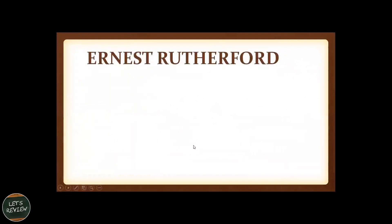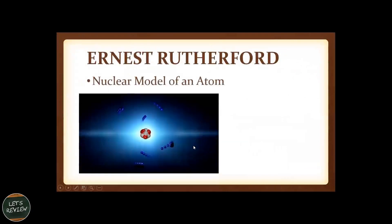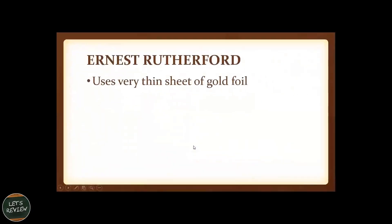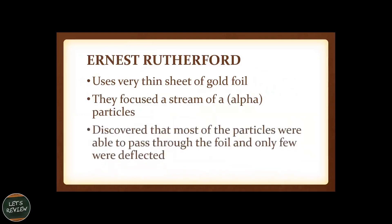Next is the idea of Ernest Rutherford. He called it the nuclear model of an atom. The atom is composed of a nucleus. He used a very thin sheet of gold foil to provide evidence of his discovery. They focused a stream of alpha particles and discovered that most of the particles were able to pass through the foil and only a few were deflected.